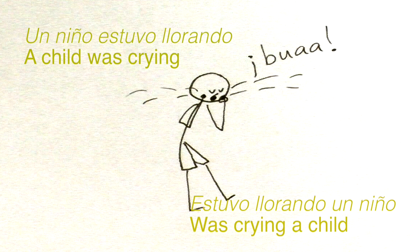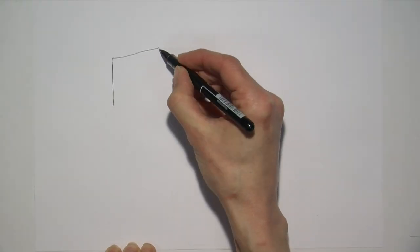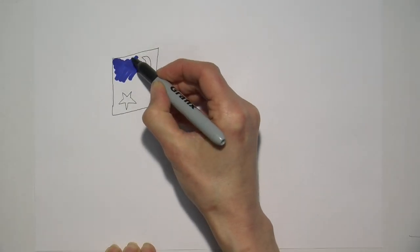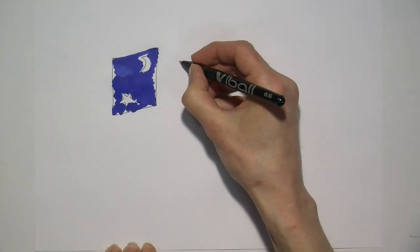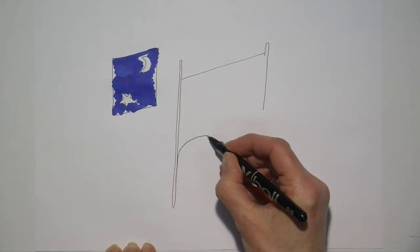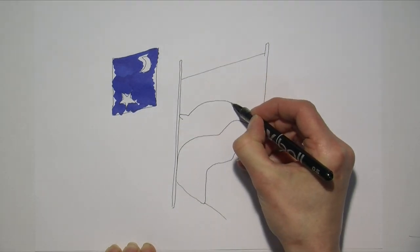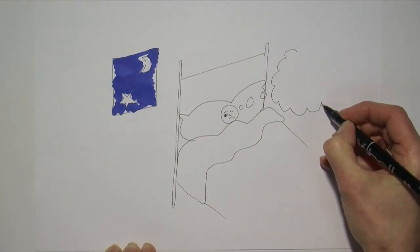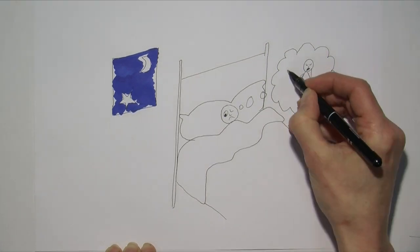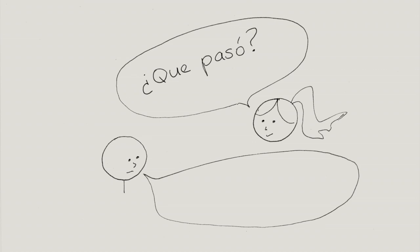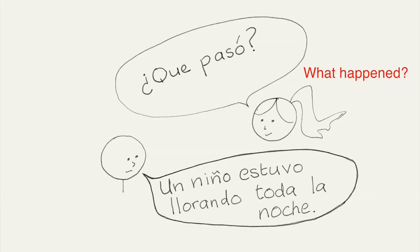Since all of this depends on context, then for our example of the child crying, we need some context in order to know which word order to use. So imagine a situation where you were in bed trying to sleep, but you couldn't, because the child was crying nearby all through the night. The next day, your friend sees you looking rough after not getting enough sleep, and asks, ¿Qué pasó? What happened? To answer, you need to talk about the thing that happened. In other words, the event. So you use the subject-verb word order, which puts the event of crying in the focus position at the end of the sentence. Un niño estuvo llorando toda la noche.